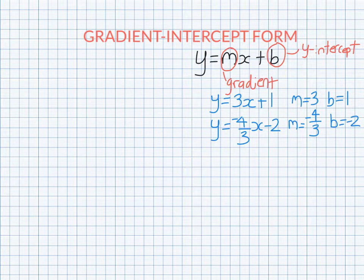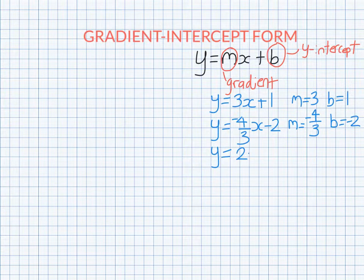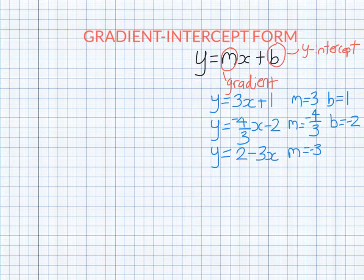Now if I switch around the order of this, it's still the number in front of x that is the gradient. So if I have something like 2 minus 3x here, the gradient is not 2, it's the number in front of x and the y intercept is the number by itself.